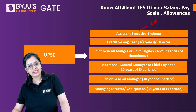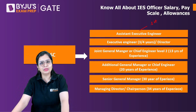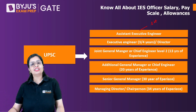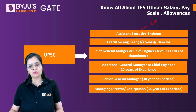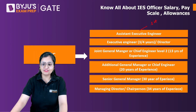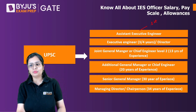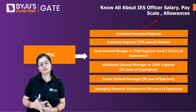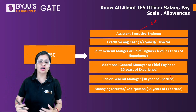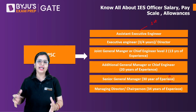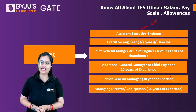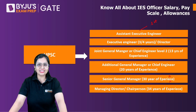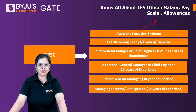After three to four years, with your promotion you will be given the post of Executive Engineer or Director. After 13 years of experience, you will be given the post of Joint General Manager or Chief Engineer Level 2. After 20 years of experience, you get Additional General Manager or Chief Engineer. After up to 30 years of experience, you will be given the post of Senior General Manager. After that, you will be given the post of Managing Director — the topmost post — or Chairperson in some PSUs, which requires around 34 years of experience. After this MD post, in about a year or two or three years, you reach retirement.